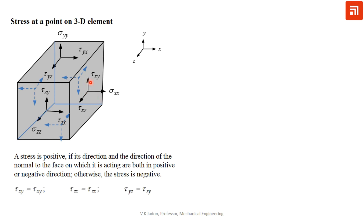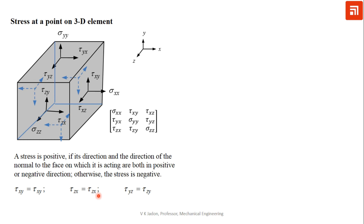Similarly, we can represent stress components using subscript notation, where the first subscript is the direction of the plane and the second subscript is the direction of the stress. All components shown are positive because the direction of stress and direction of plane are both positive. Considering complementary shear stress — which is equal and opposite — these six components are given by a three-by-three matrix.